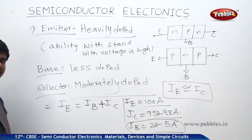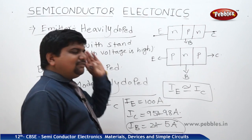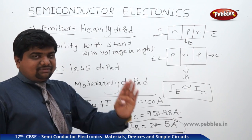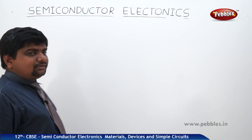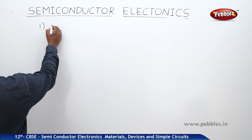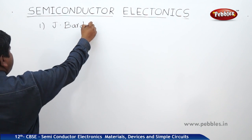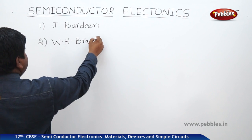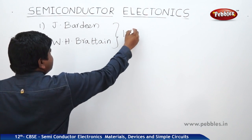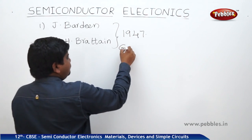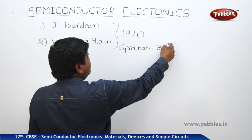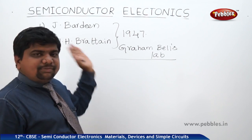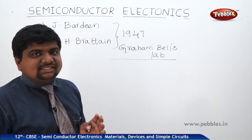Two scientists are credited with the discovery of the transistor: J. Bardeen and W.H. Brattain. In 1947, while doing research in Bell Labs, they discovered these transistors. Although Graham Bell had passed away by then, the experiments were conducted using equipment in Bell's lab.